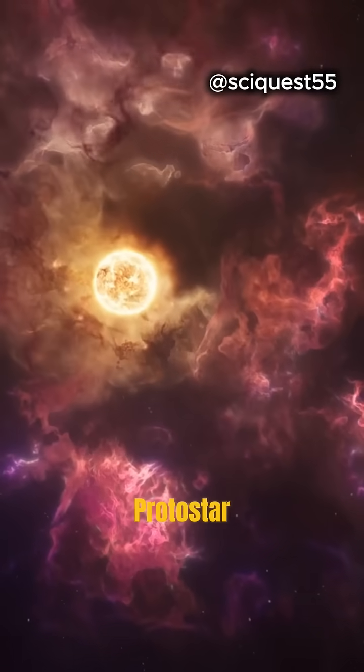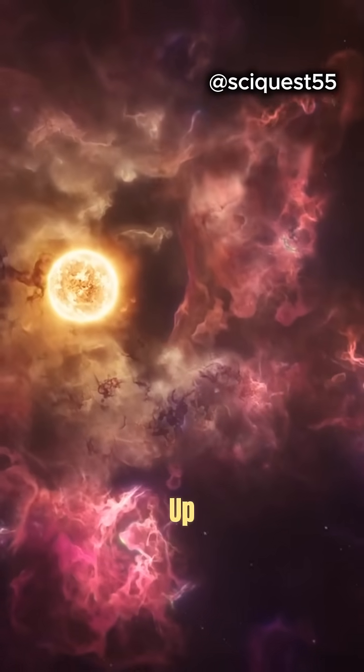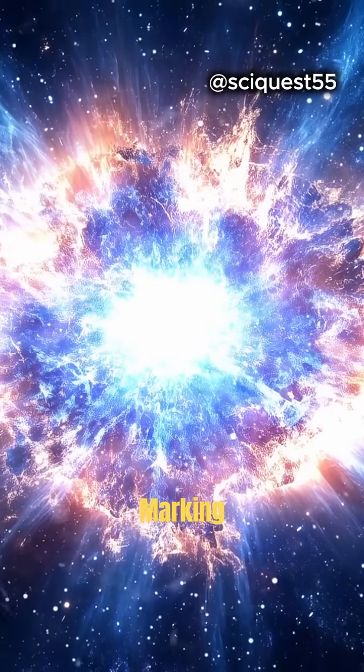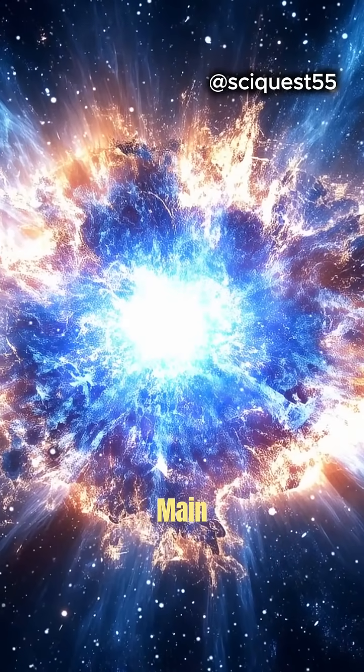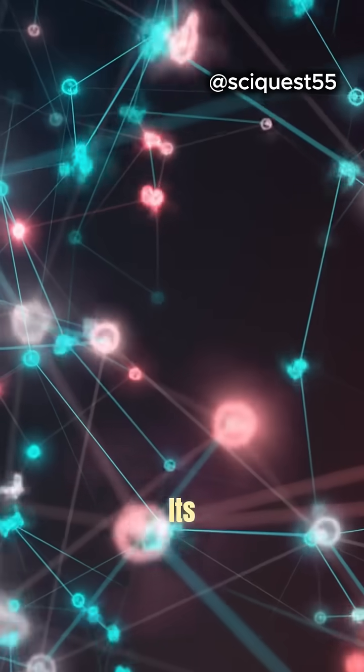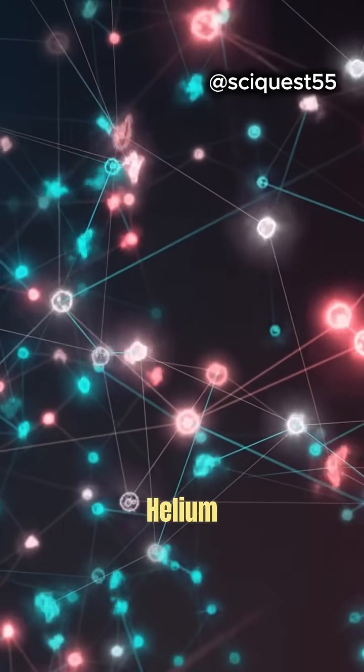As the protostar gathers more mass and heats up, nuclear fusion ignites in its core, marking its transition into a main-sequence star, the longest and most stable phase of its life, where it fuses hydrogen into helium.